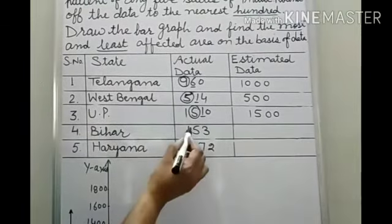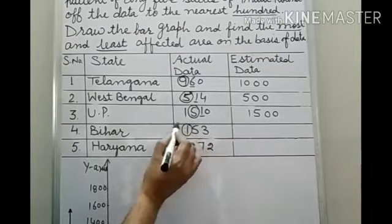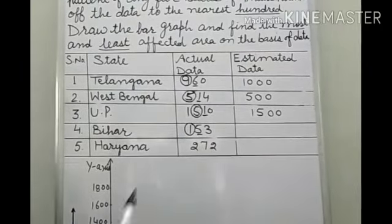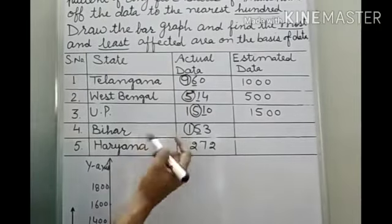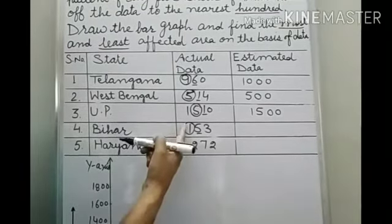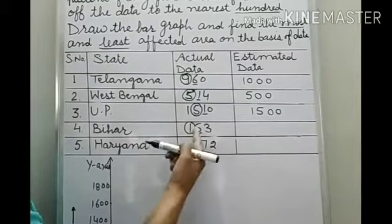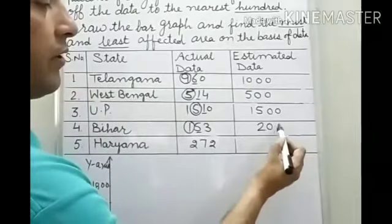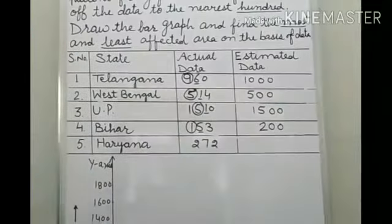Then again you just encircle this digit. Now see this 5. Here exact 5 is there. So you have to add 1 to this number. So when you will add, what it will become? It will become 2. And these two digits will be 00. So 153 will be rounded up to the 200.